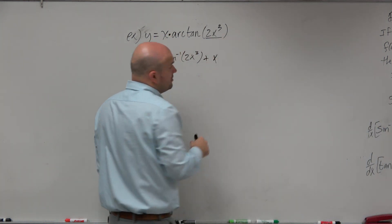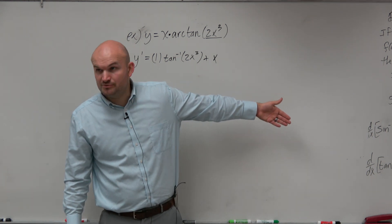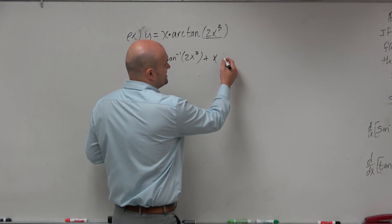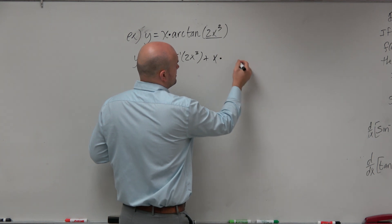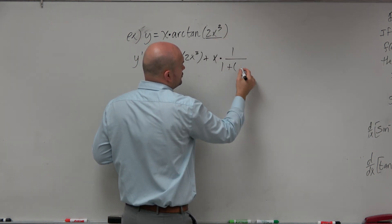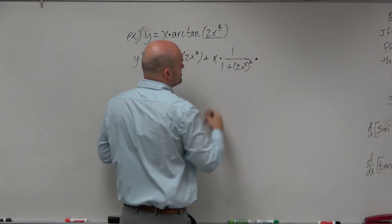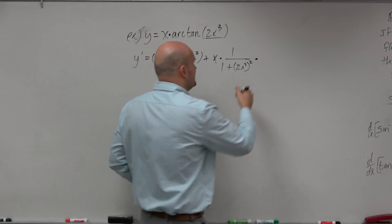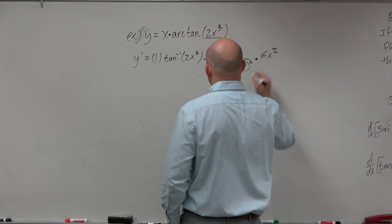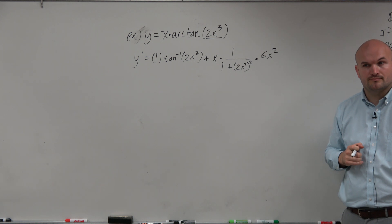Notice that our u is 2x³. That's important because we're going to need to be plugging that in. So it's going to be times 1 over 1 plus my u, 2x³ squared, times my u prime, which is going to be 6x².